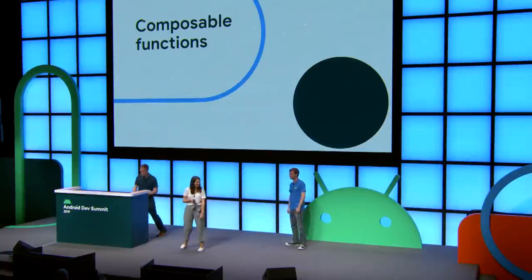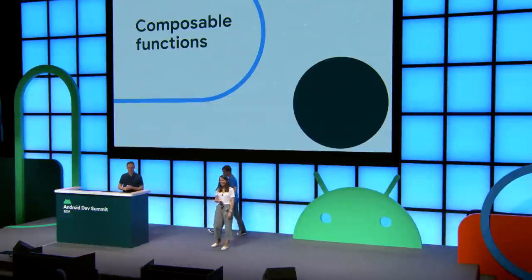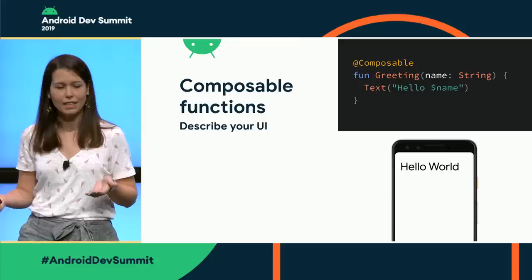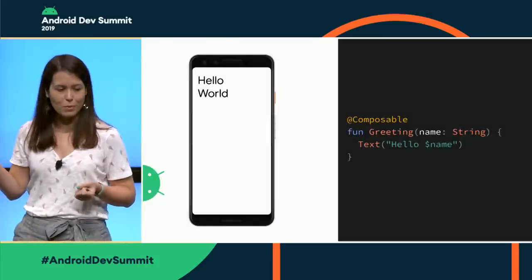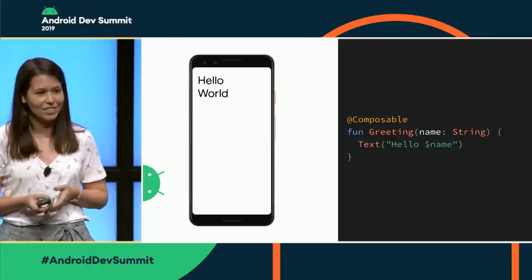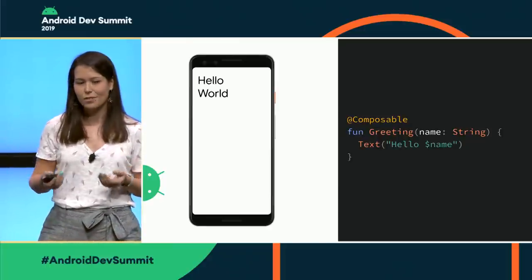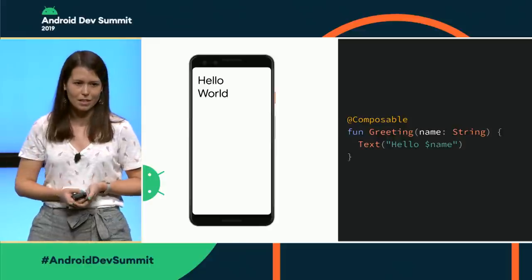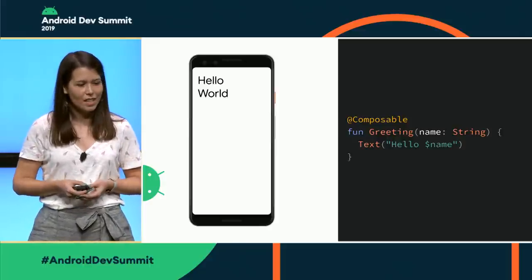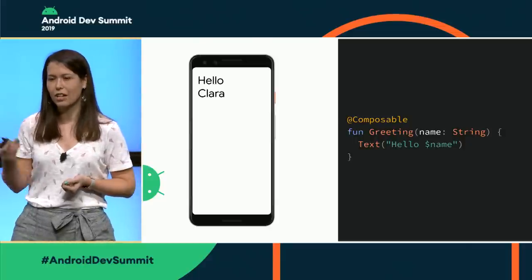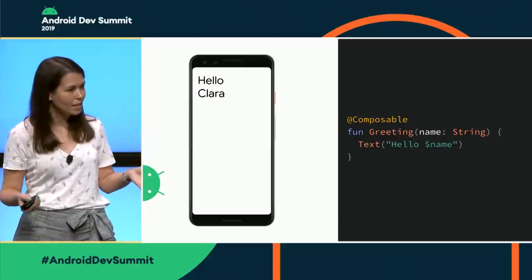I want to walk you through some basic concepts you need to understand to play with Compose. The first is composable functions. A composable function is just a function — it takes some input and decides what UI to show based on that input, transforming your application data into your UI hierarchy. For example, a Greeting composable takes a name as a string and emits a Text element using that string. Text is our equivalent of TextView. Whenever the input changes, the runtime figures out what changed, re-invokes the function, and updates the UI hierarchy. You just describe what you want to see.